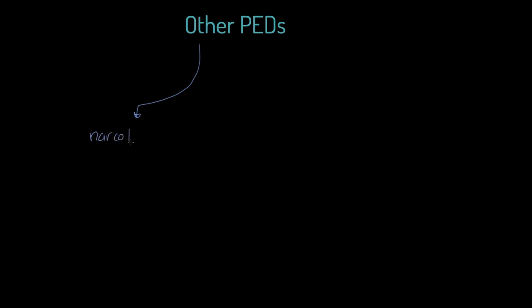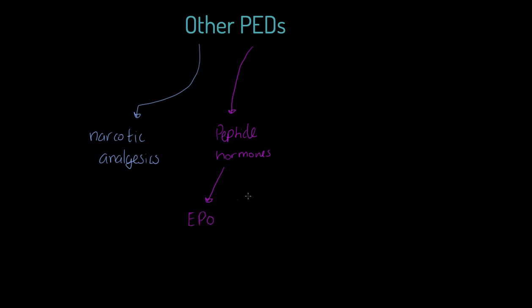We're going to look at other PEDs in addition to those studied in other tutorials. First, we'll talk about narcotic analgesics — essentially painkillers. We'll also look at a pulmonary enhancing drug called a peptide hormone. We're going to examine two examples: EPO, which is erythropoietin, and HGH, which is human growth hormone, looking at the advantages and disadvantages of both.